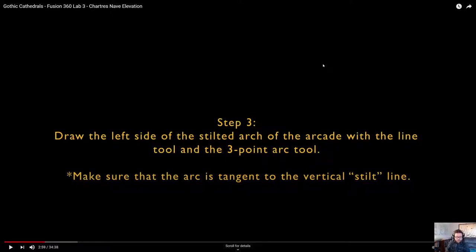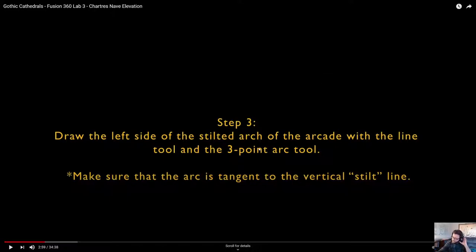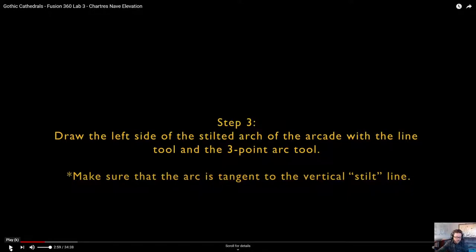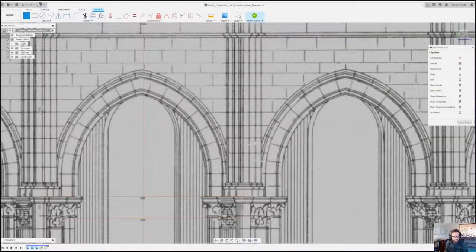The next step is to draw the left side of what I'm calling a stilted arch. A stilted arch is similar to a lancet — the arched part doesn't come all the way down and spring right from the top of the capital. It has vertical lines first, and then it hits the capital. We want to make sure it stays clean, meaning it's going to be tangent to the vertical line. Tangent means this arch or circle will only touch each of those vertical lines in one location, so it will flow very cleanly.